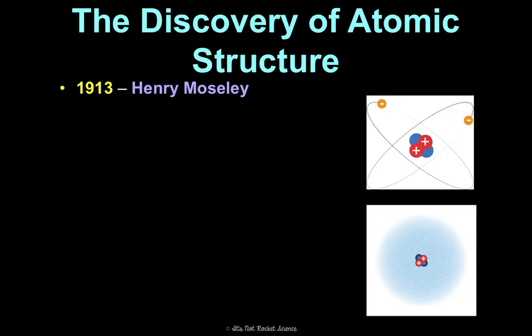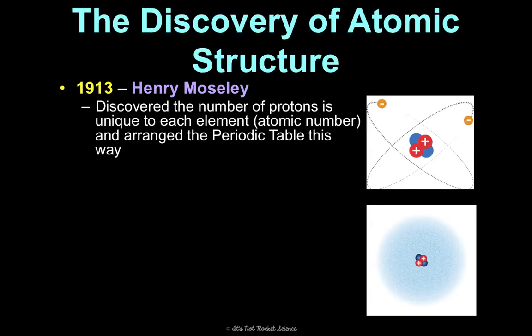In 1913, Henry Moseley discovered that the number of protons in an element is unique to that element — that's what the atomic number is. Hydrogen has one proton, so its atomic number is one. Helium has two protons, so its atomic number is two. He arranged the periodic table based on atomic numbers, or number of protons, and that is how we arrange the periodic table today.